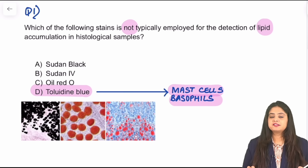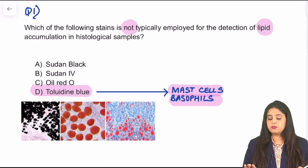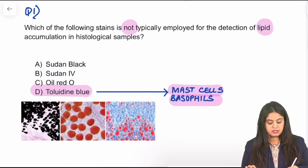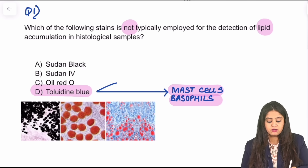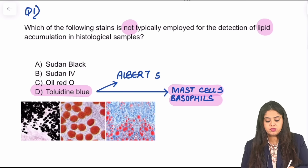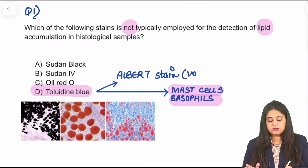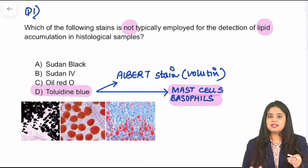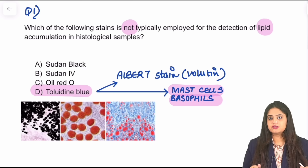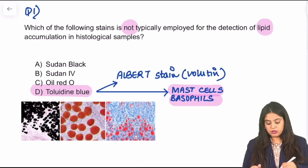Toluidene blue has been a recent exam question — what is it for? It is a special stain for mast cells and basophils. Also importantly, Toluidene blue has been used in microbiology as part of the Albert stain, which is used for the volutin granules of Corynebacterium diphtheriae — Toluidene blue is one of its constituents.